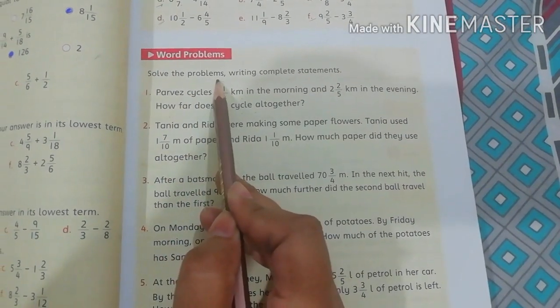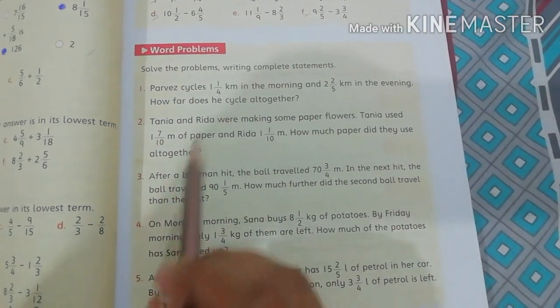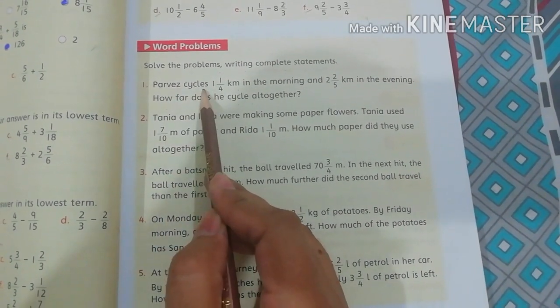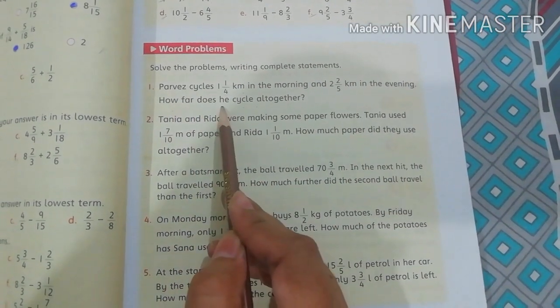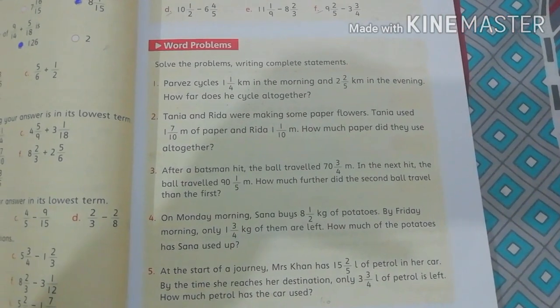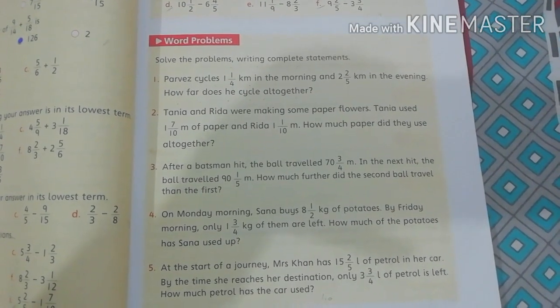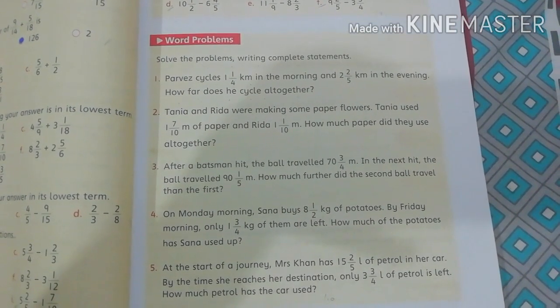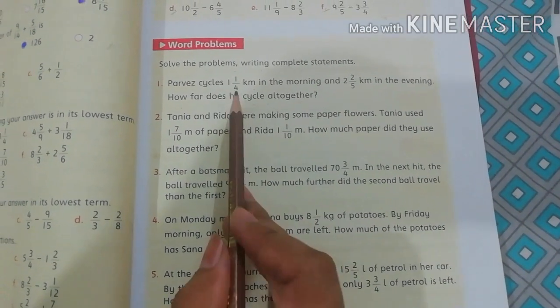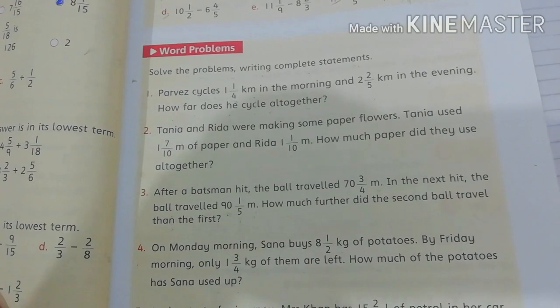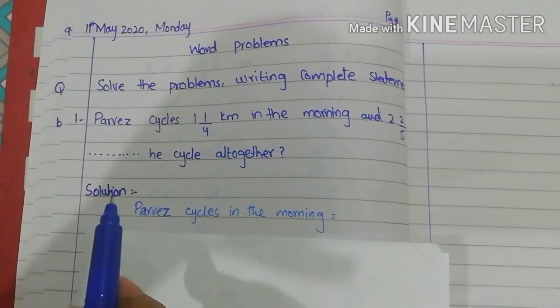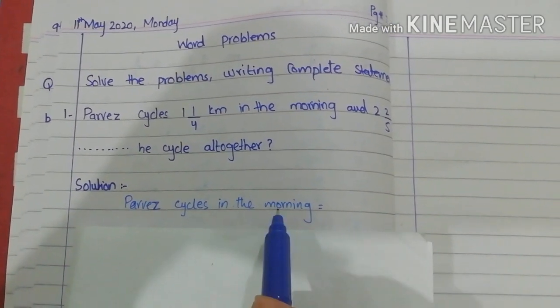Solve the problems writing a complete statement. Problem number 1: Perway cycles 1 whole 1/4 km in the morning and 2 whole 2/5 km in the evening. How far does he cycle altogether? We are given the distances — in the morning he covered 1 whole 1/4 km, and in the evening 2 whole 2/5 km. We need to find the total distance, so we will add.